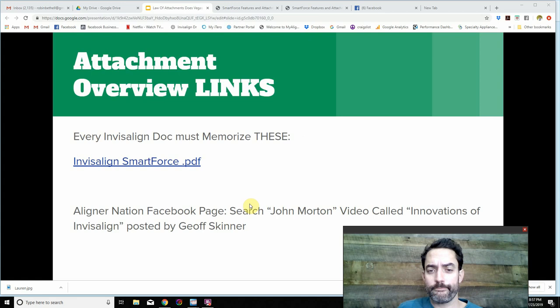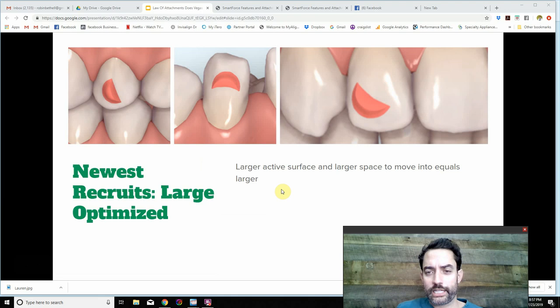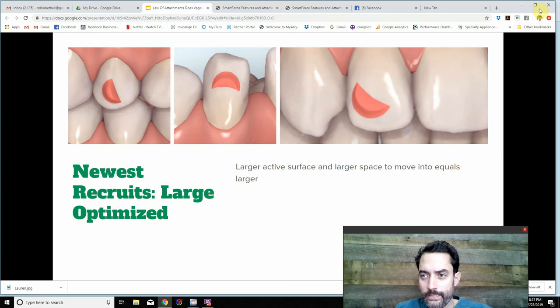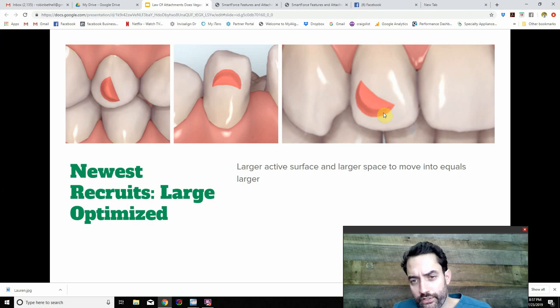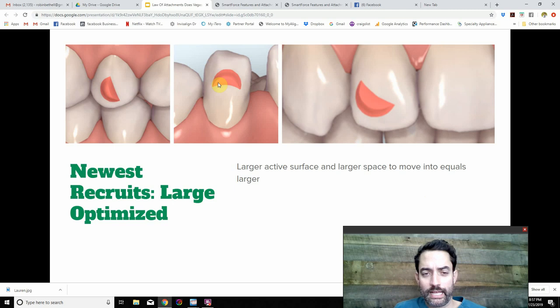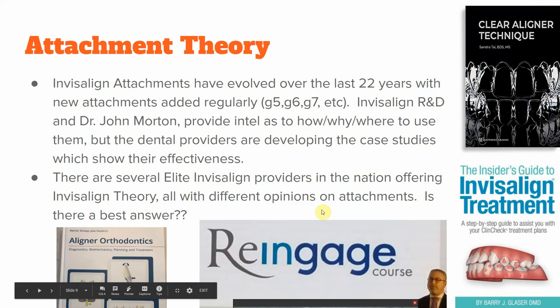The newest addition to attachments are the large optimized attachments. They weren't included on the Smart Feature slide that just came out about two months ago. They're larger — the active surface where the dimple is and where the plastic engages is bigger, with a bigger relief for the tooth to move into. Bigger is better, as we say in Texas. Hopefully this will allow more force on the teeth and more predictable movements.